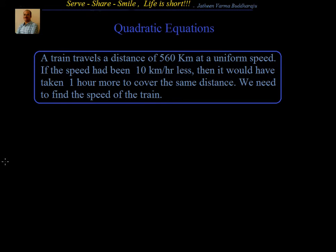Hello, welcome back. In the last session, we represented this scenario in the form of a quadratic equation. If you remember, we got the quadratic equation as x squared minus 10x minus 5600 equal to 0. We equated the difference of the time equal to 1 hour, because the second scenario takes more time. The distance is speed into time, or time equals distance by speed.